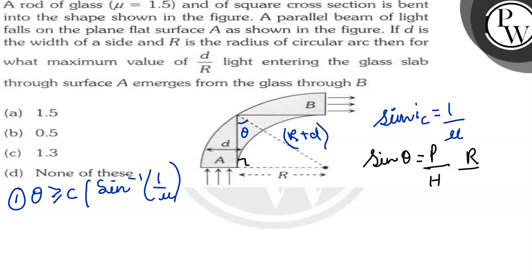So from here we can see theta should be greater than or equal to R upon R plus D. Theta should be greater than or equal to R upon D.